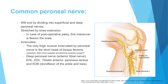The deep peroneal nerve supplies the anterior muscles of the lower leg: the tibialis anterior, extensor hallucis, extensor digitorum, and peroneus tertius. It also supplies the extensor digitorum brevis in the foot. All these muscles are supplied by the deep peroneal nerve.